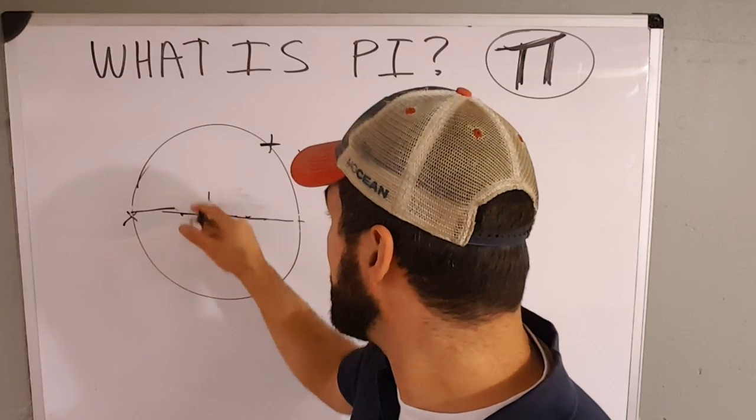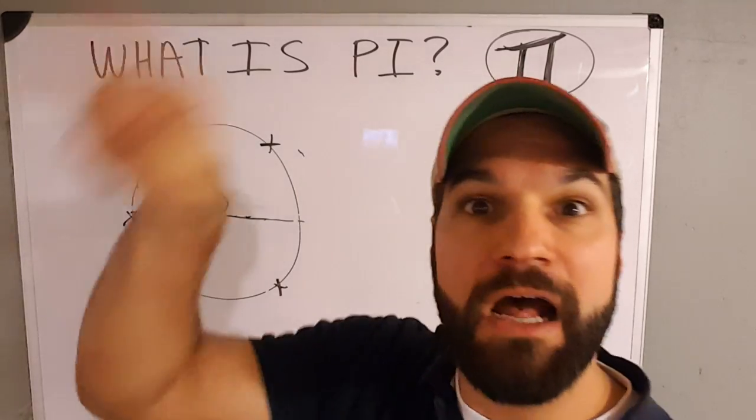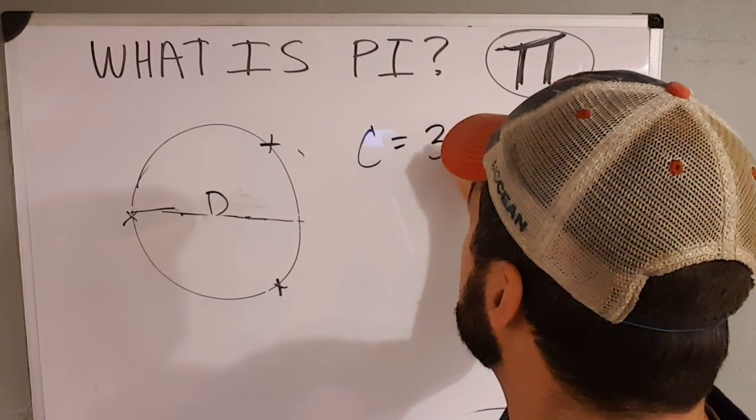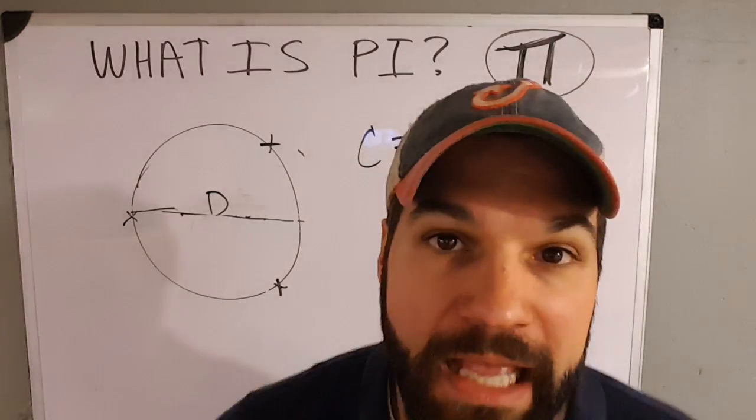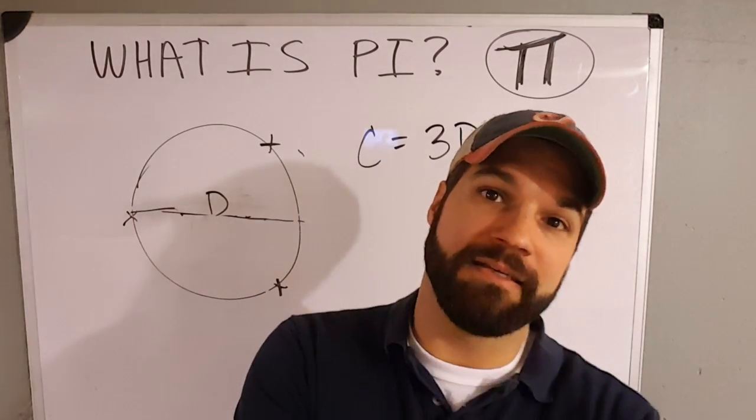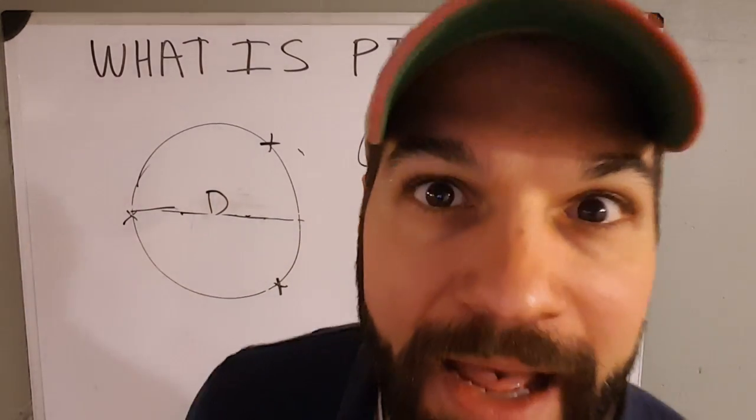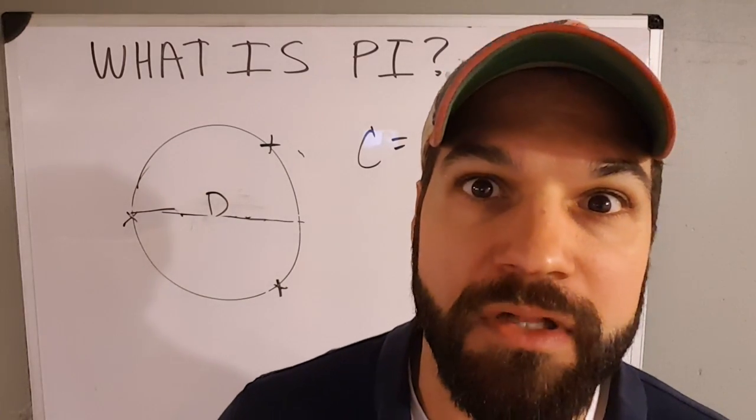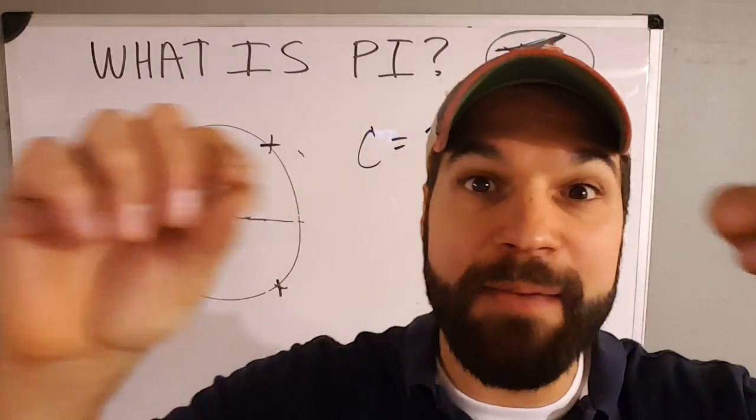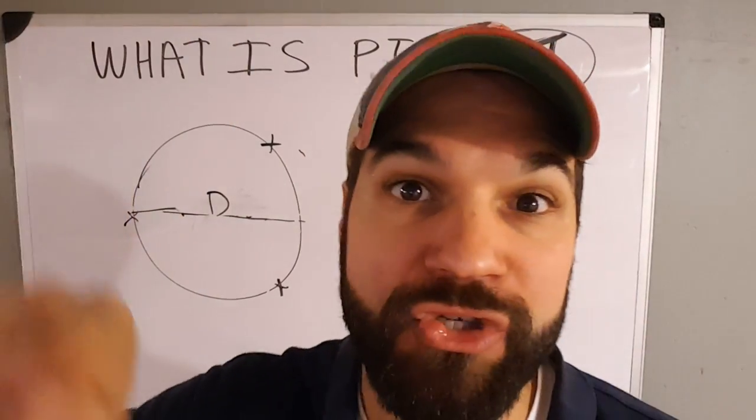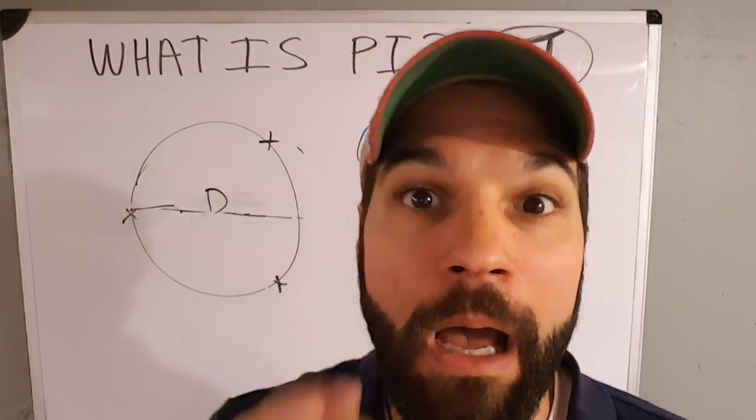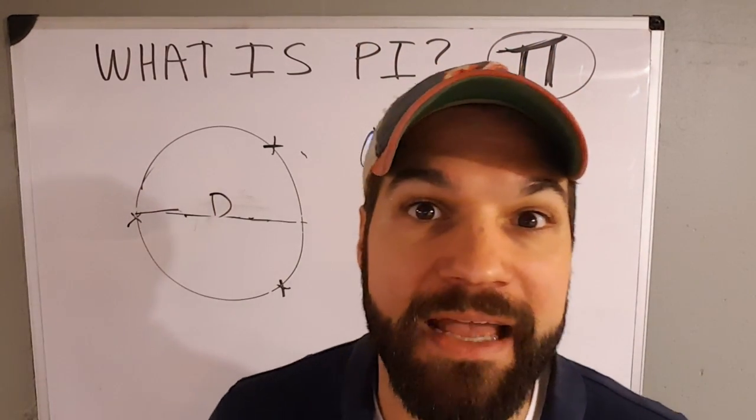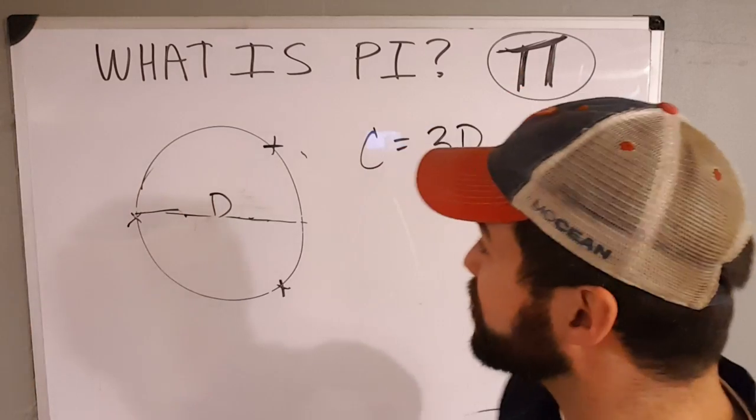So we can make a formula for that. If this is diameter D, how many of them go around the circle? Well, the circumference is simply equal to three diameters. 3D. But I told you a little lie. It's not actually three diameters that go around the circle. The exact number of diameters that wrap around a circle is exactly pi. Pi of them.